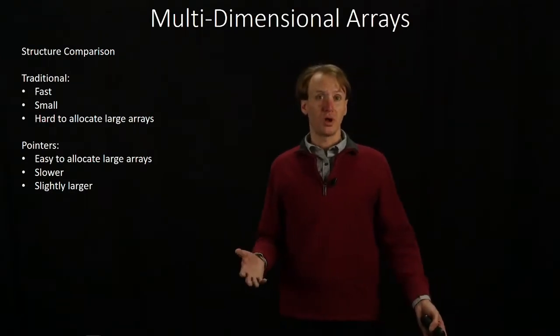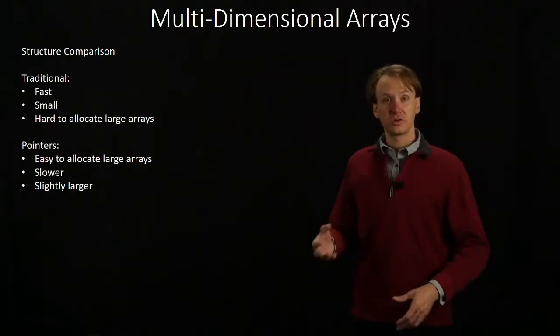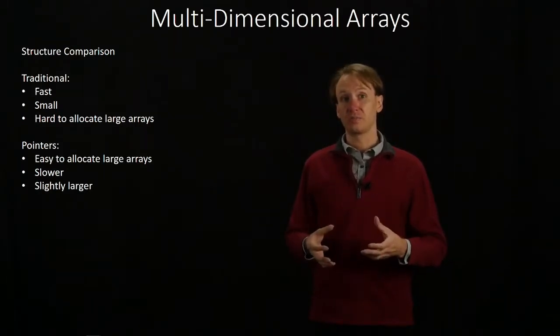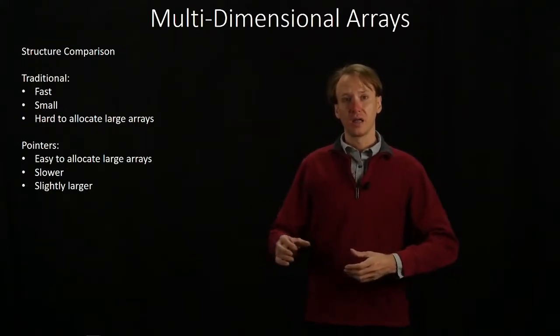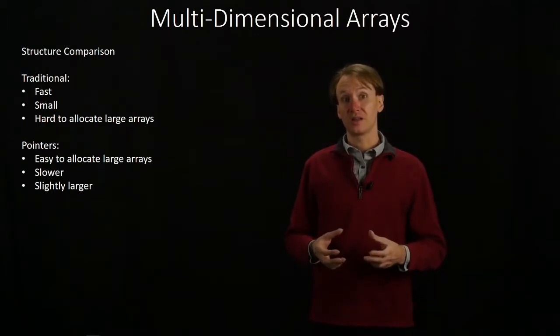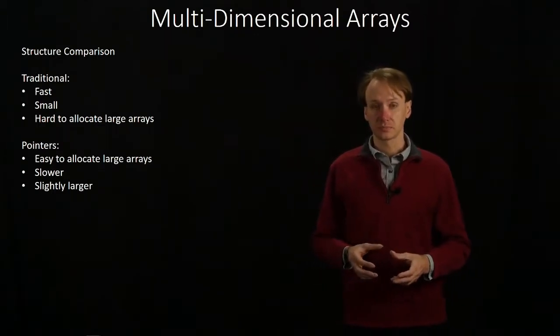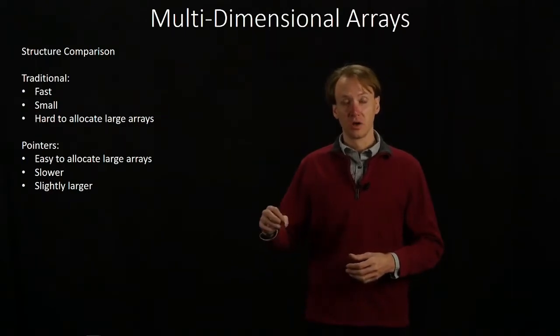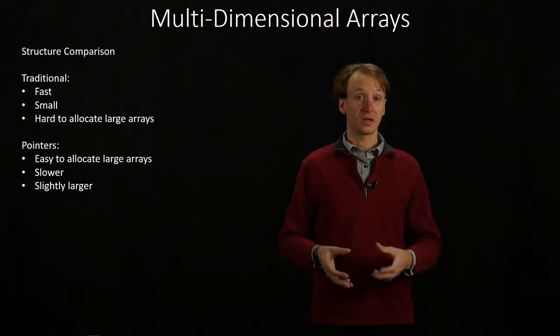So why would we want one of these over the other? The traditional method is nice because it's fast and it's small. We're only allocating as much space as we need for our data, and our compiler can figure out exactly where that data is. As long as we know where our base address for our object is, we can reference any other cell in there directly.